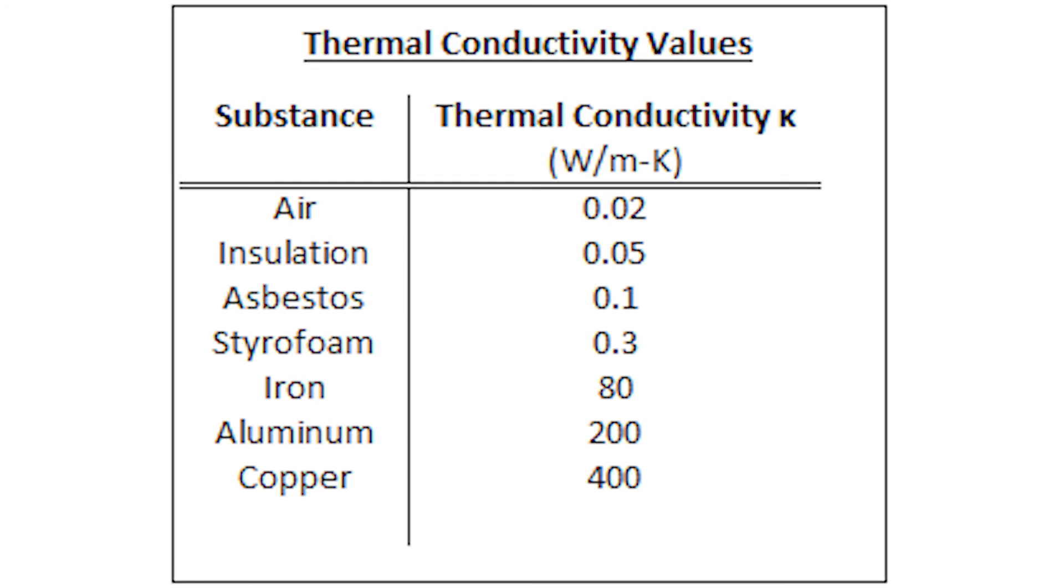Here is a table of thermal conductivities for common substances, and we can see that air has a very small value of thermal conductivity, meaning that little heat energy can move through it. Insulating substances like asbestos have very small values, and insulators commonly trap air inside. Conversely, metals like aluminum have very high values, allowing a lot of thermal energy to move through them.